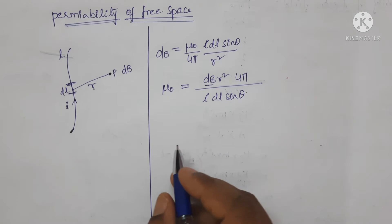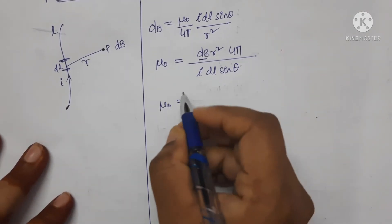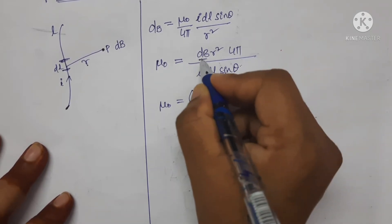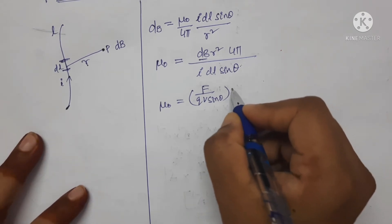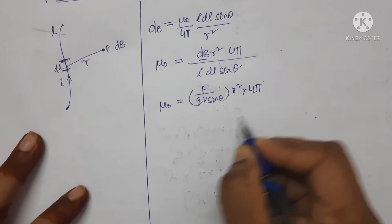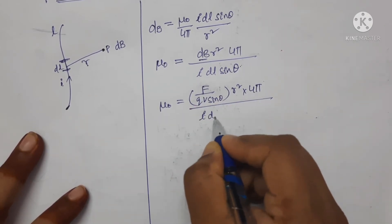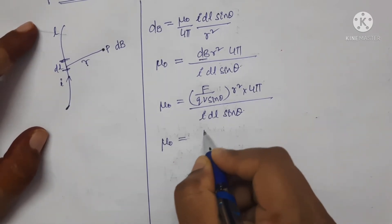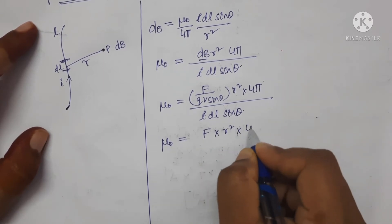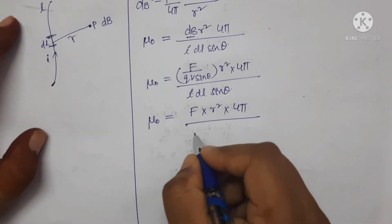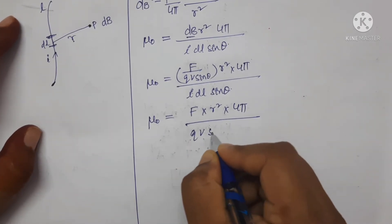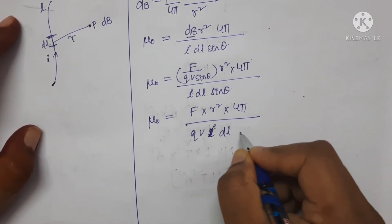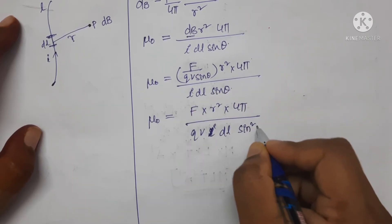Now, the formula for magnetic field is B = F / (QV sinθ). Substituting this for dB, we get: μ₀ = (F × R² × 4π) / (QV × I × DL × sin²θ).